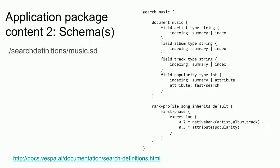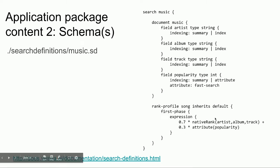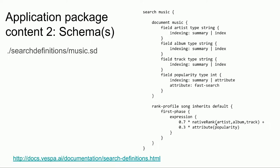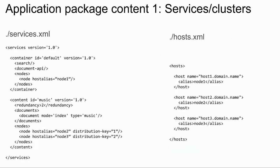You also need at least one data schema. A schema is a collection of fields — for each you specify whether to index it, show it in results, etc. It also contains rank profiles defining what to compute over documents when matching and ranking. A rank profile can be a simple handwritten mathematical expression, or it can reference a TensorFlow model or something else. That's all you need to create an application.